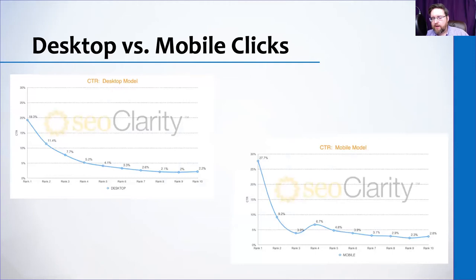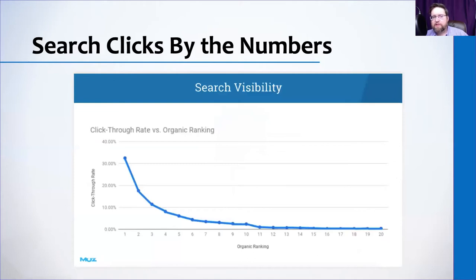SEO Clarity offered research to show those numbers more visually, specifically comparing desktop versus mobile. The numbers are slightly different, but predominantly the curve looks similar. This is from Moz training, and this visual representation of click distribution is going to become important later in the presentation as we tie back to understanding how all this works.